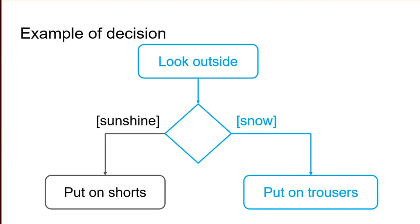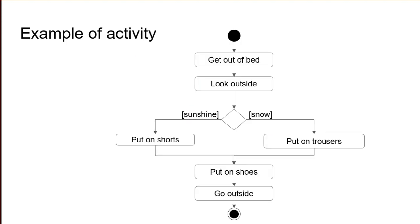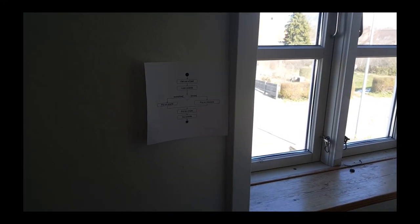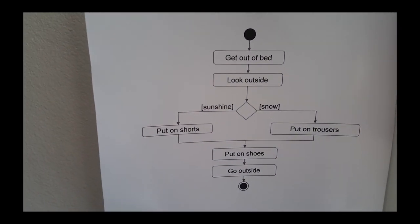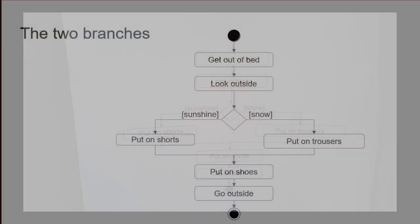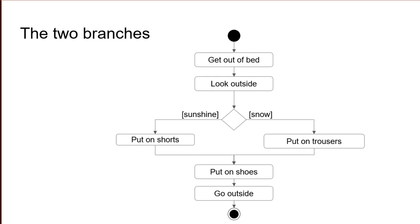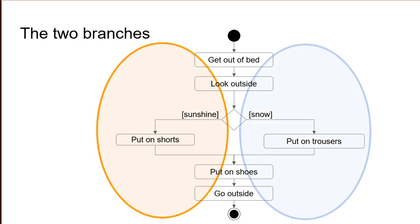So my complete morning routine looks like this from start to end: I get out of bed, look outside and decide — depending on the weather — to put on either shorts or trousers. And then, no matter what I chose, I put on my shoes. And then, and only then, remembering the complaints from the neighbors, I go outside. A decision is also sometimes called branching, since it creates two or more independent flows or branches in the activity diagram. In my morning routine there are two branches: the sunshine branch where I put on shorts, and the snow branch where I put on trousers.